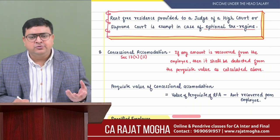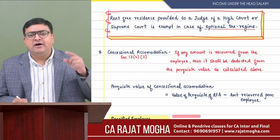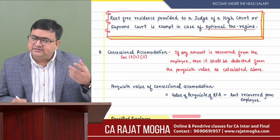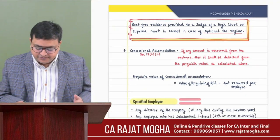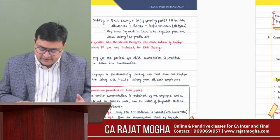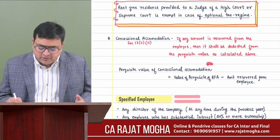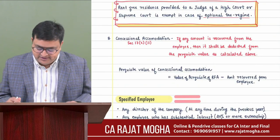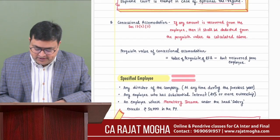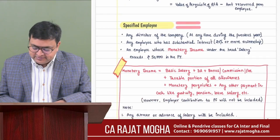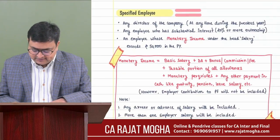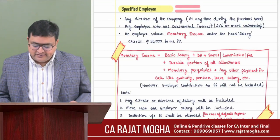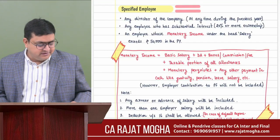Concessional accommodation is very easy to calculate. First calculate the value as if it were rent-free accommodation using the same methods we discussed. Then deduct whatever amount is recovered from the employee. The result is the value of the concessional accommodation perquisite.